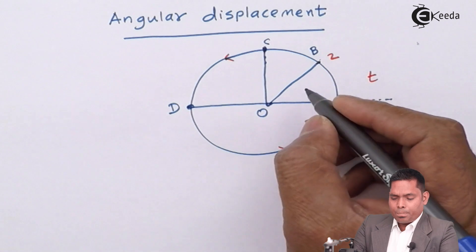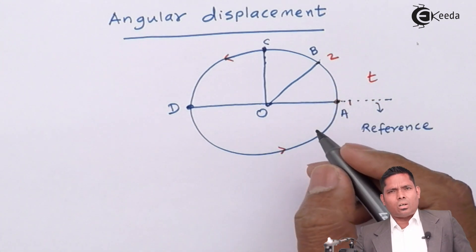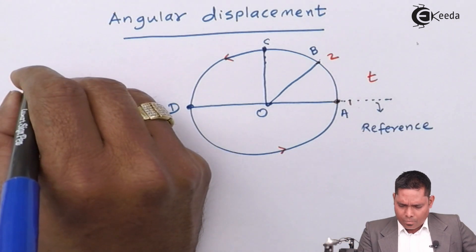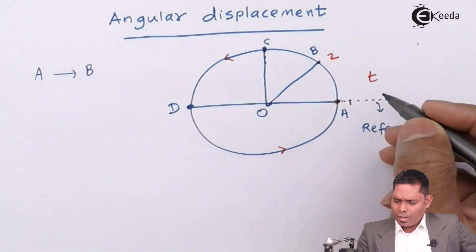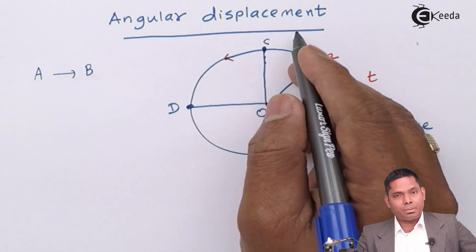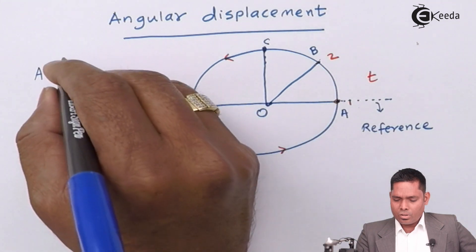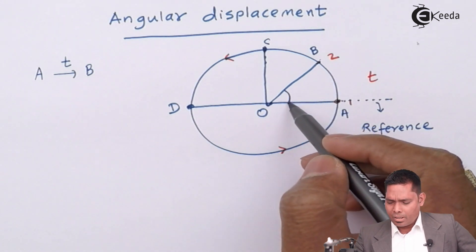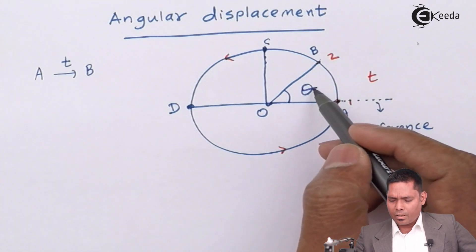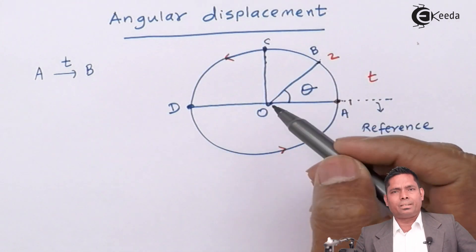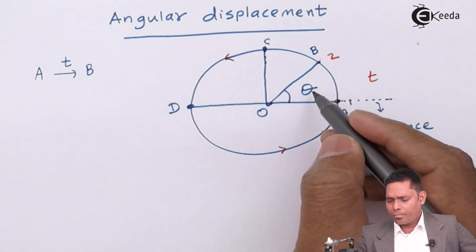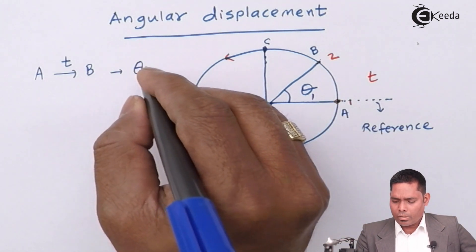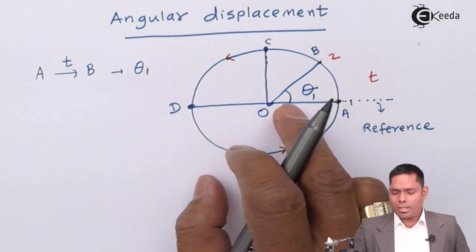Angular displacement is the change in angular position. If a particle moves from position A to position B in time T, then the angle described — suppose this angle is theta — that angle theta is the angular displacement. From A to B the angle traveled is theta 1, and that is the angular displacement.